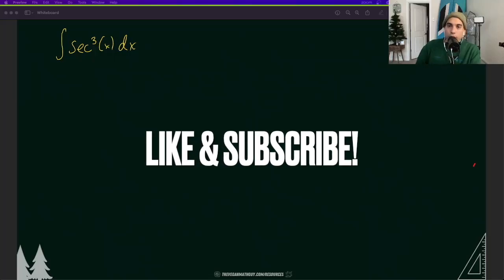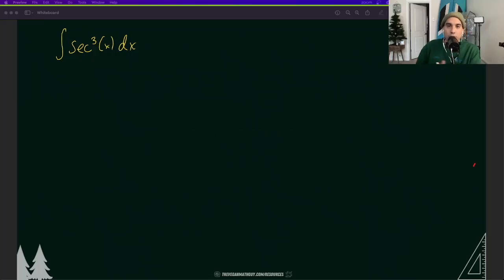We're going to solve this two different ways and they're both going to use integration by parts and some trig identities. First, we're going to rewrite this as secant squared x secant x dx. It's still the same function and we're going to use integration by parts here.